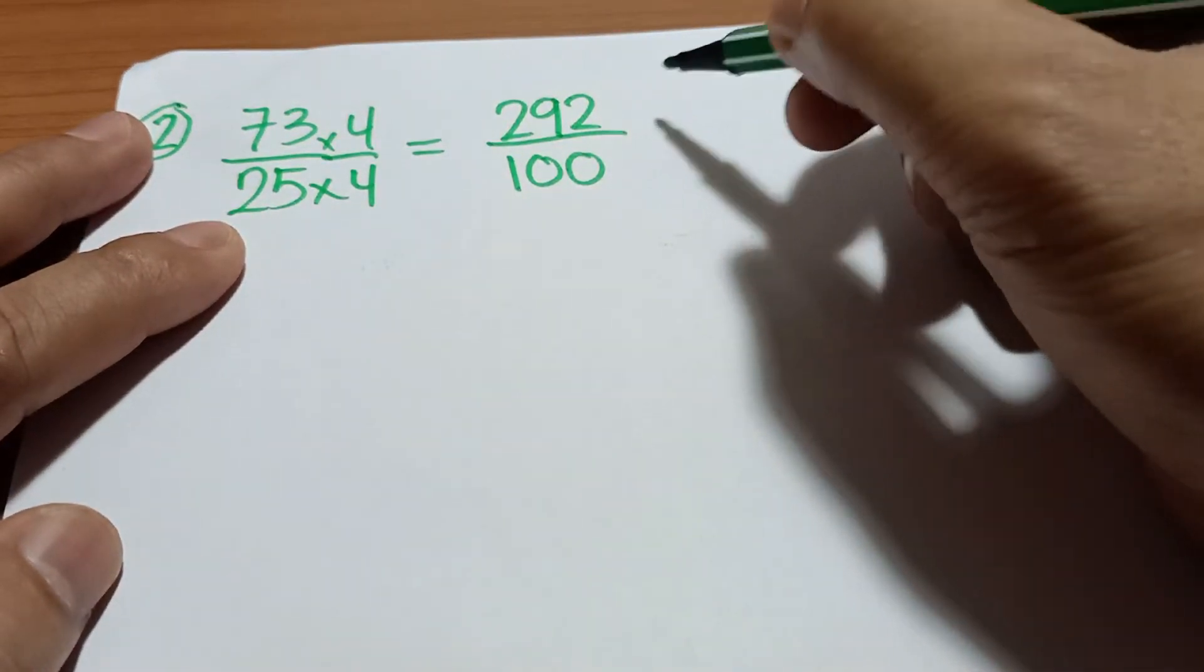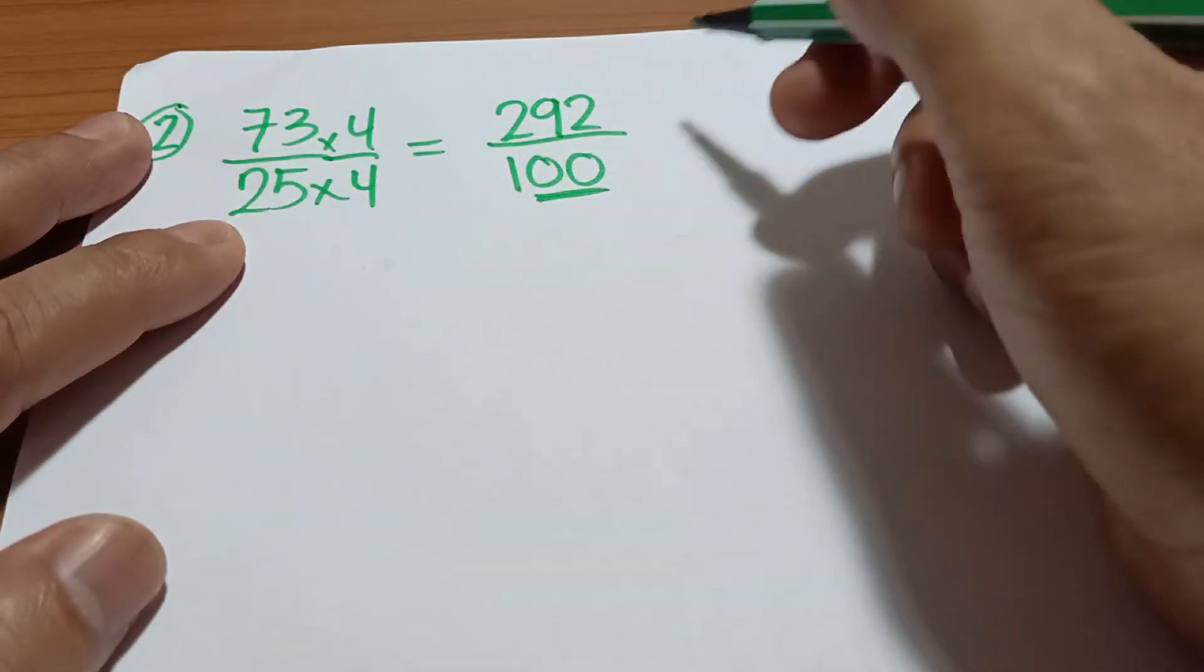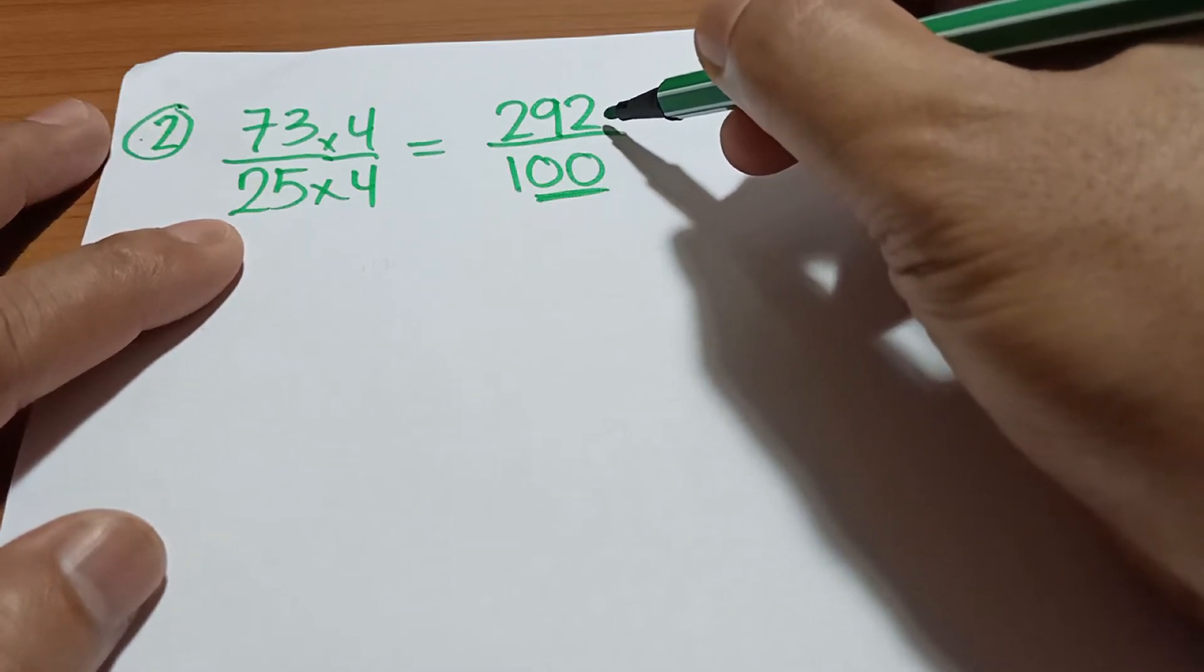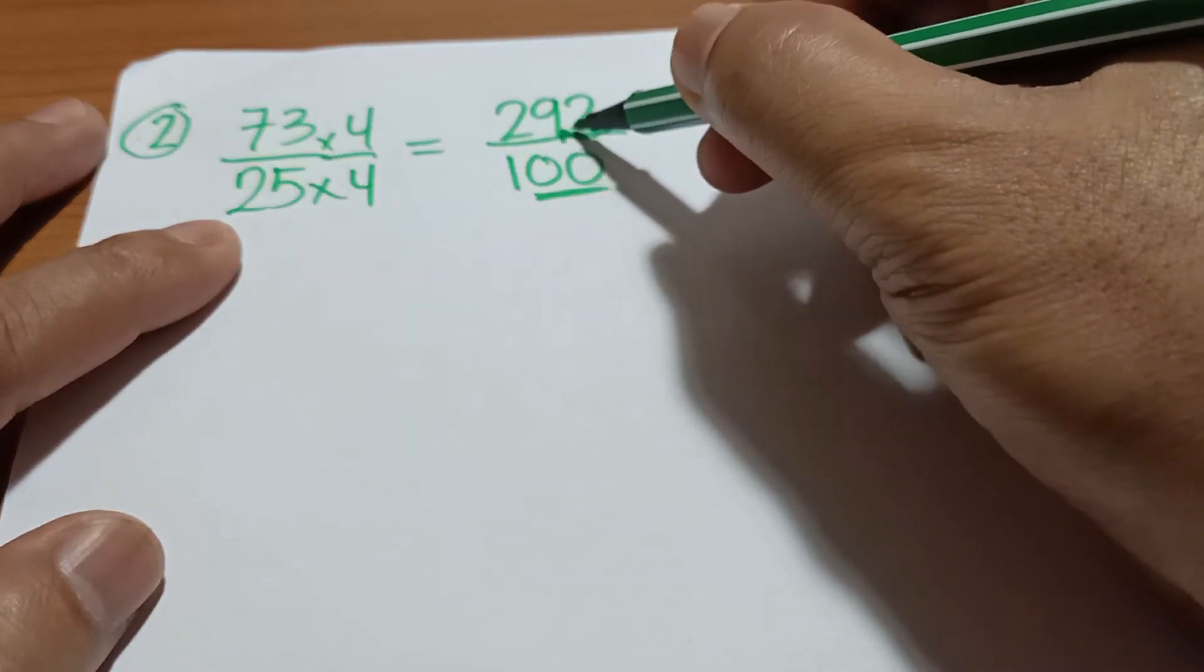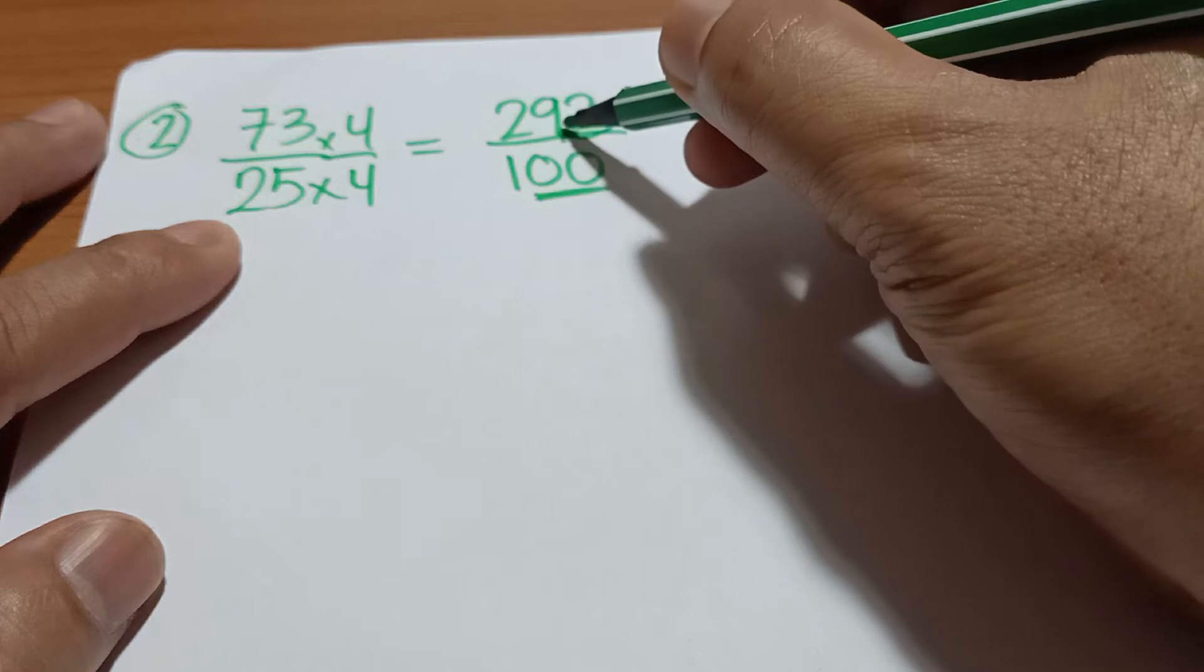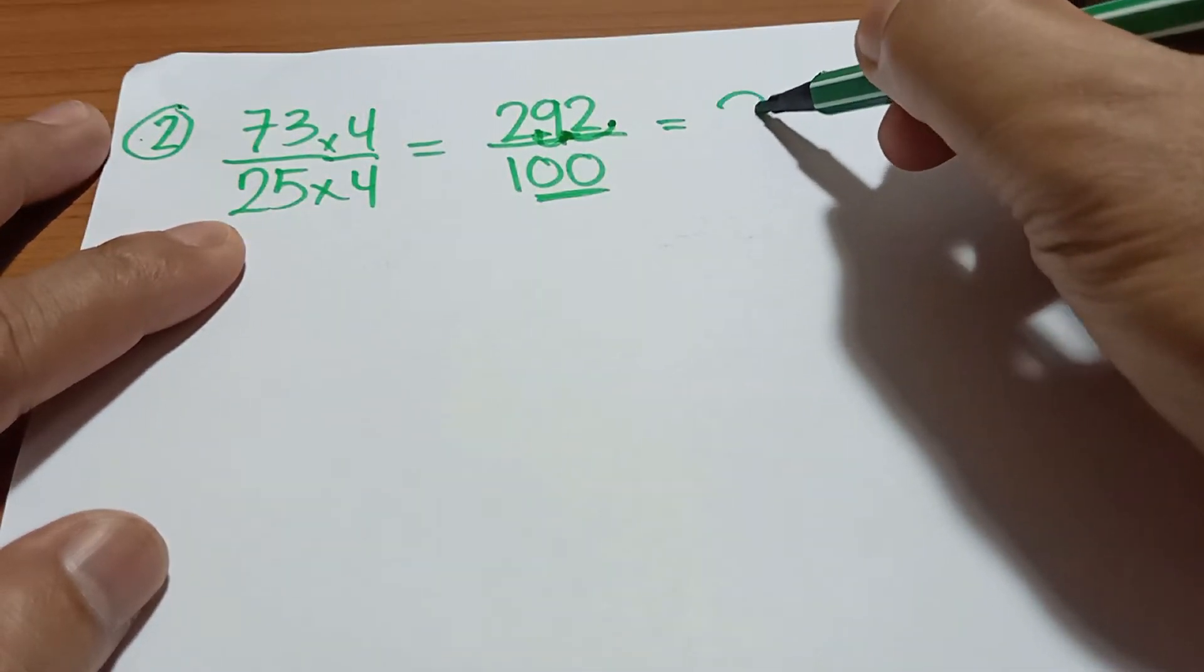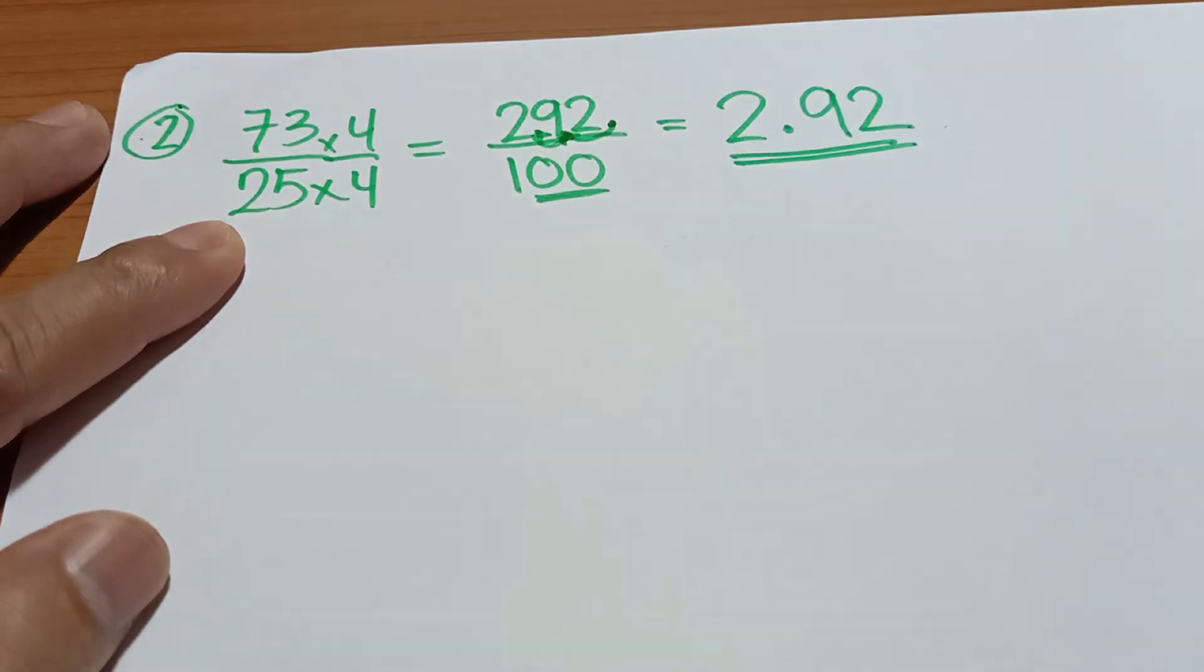So again, since you have 2 zeros in your denominator and your decimal point is on the right side of the last digit, you just move your decimal point going to the left twice. So 1 and then 2. So your answer is 2.92. That's how easy it is.